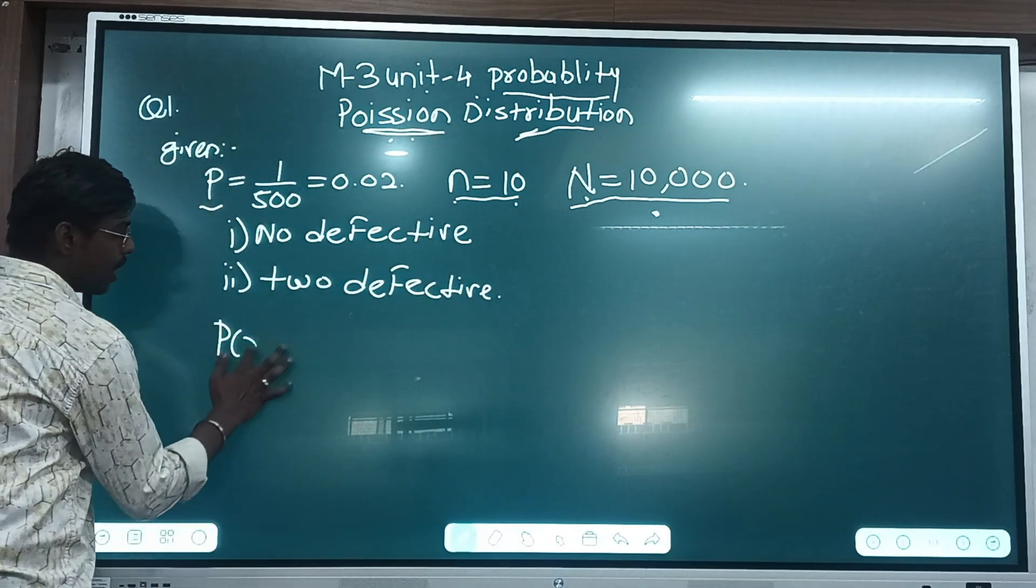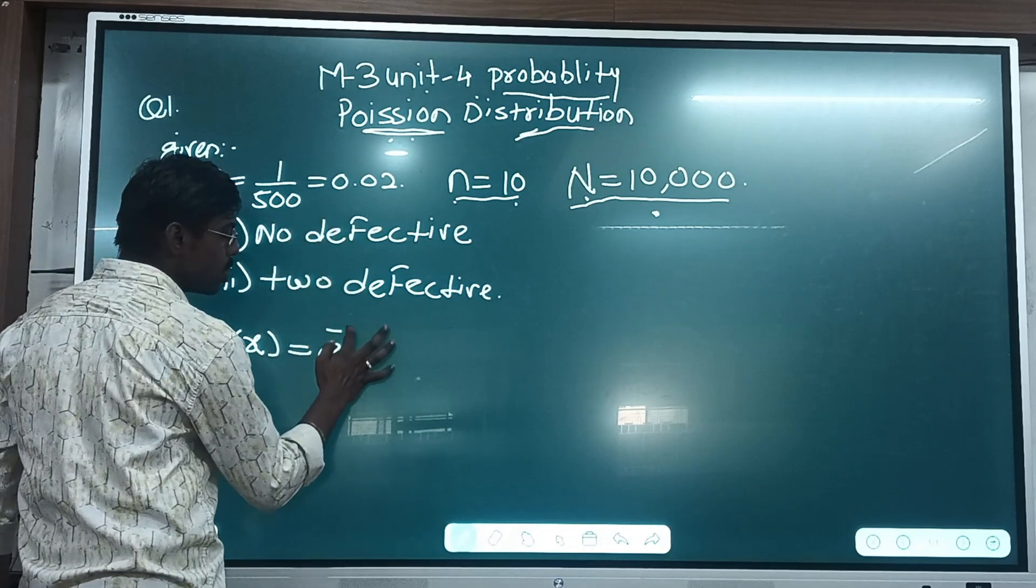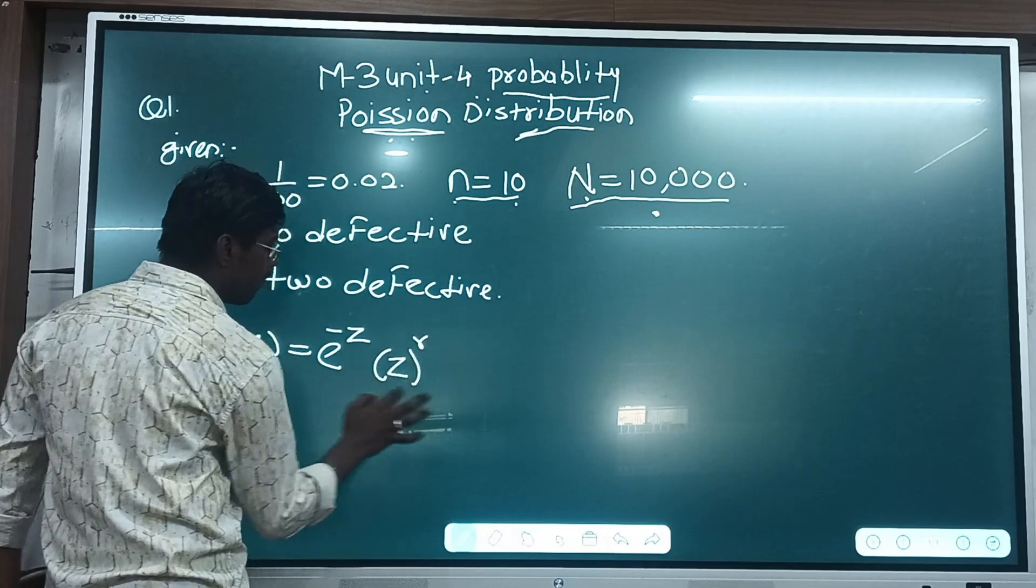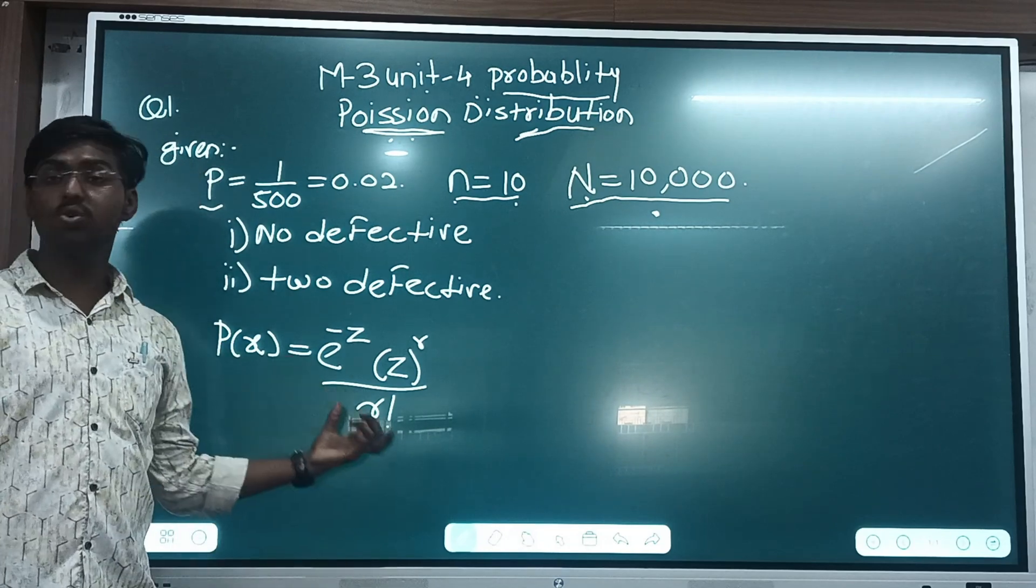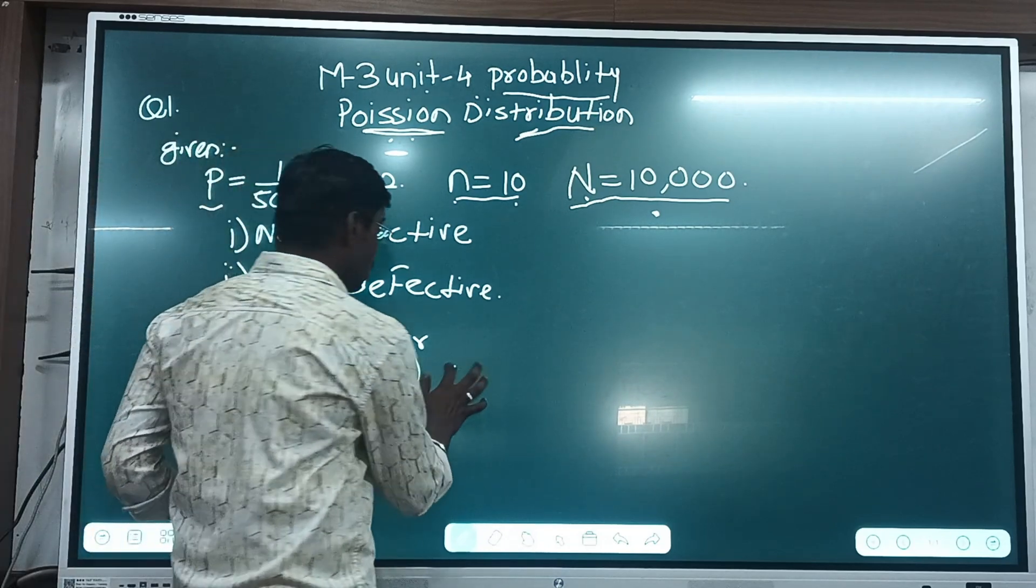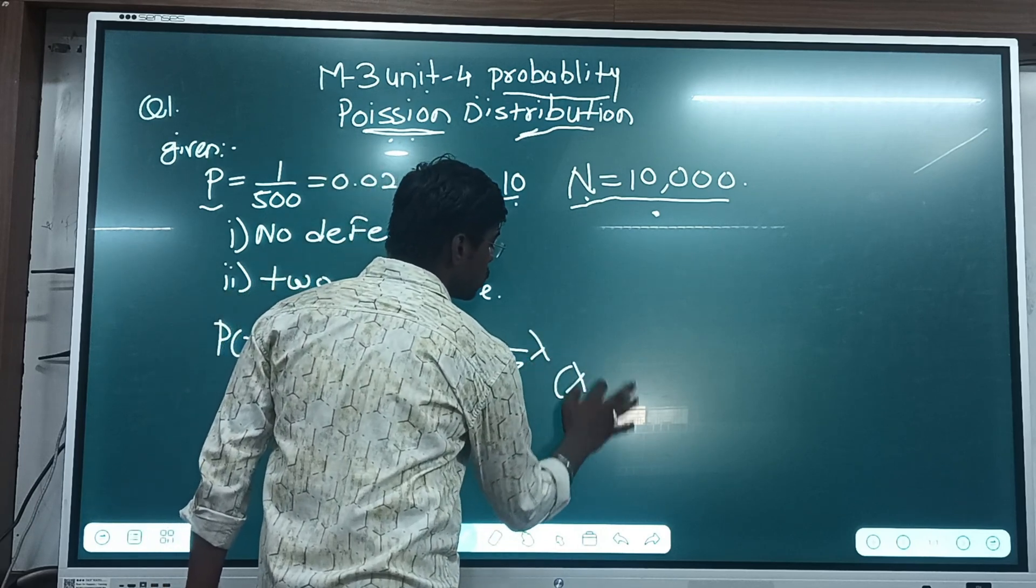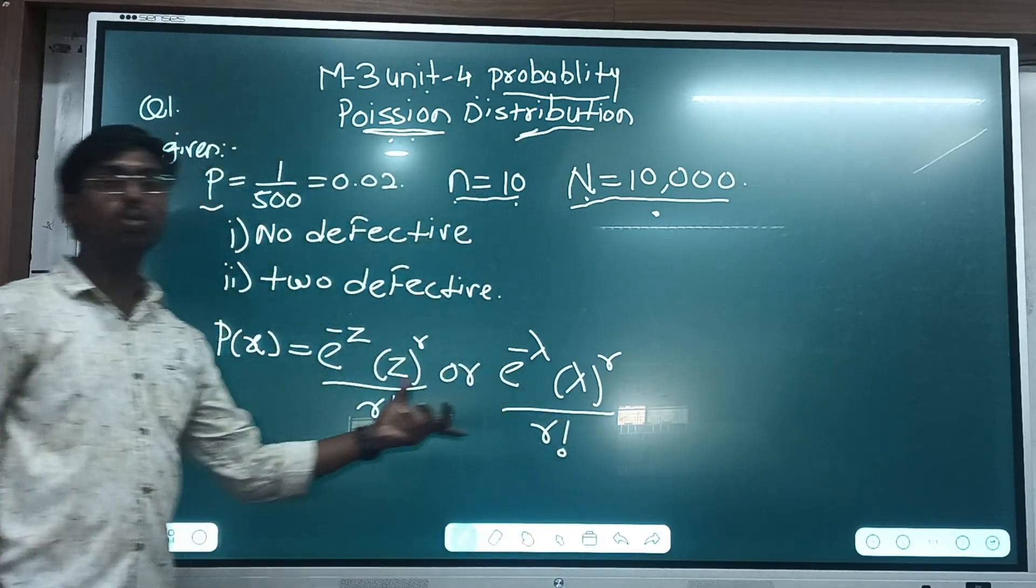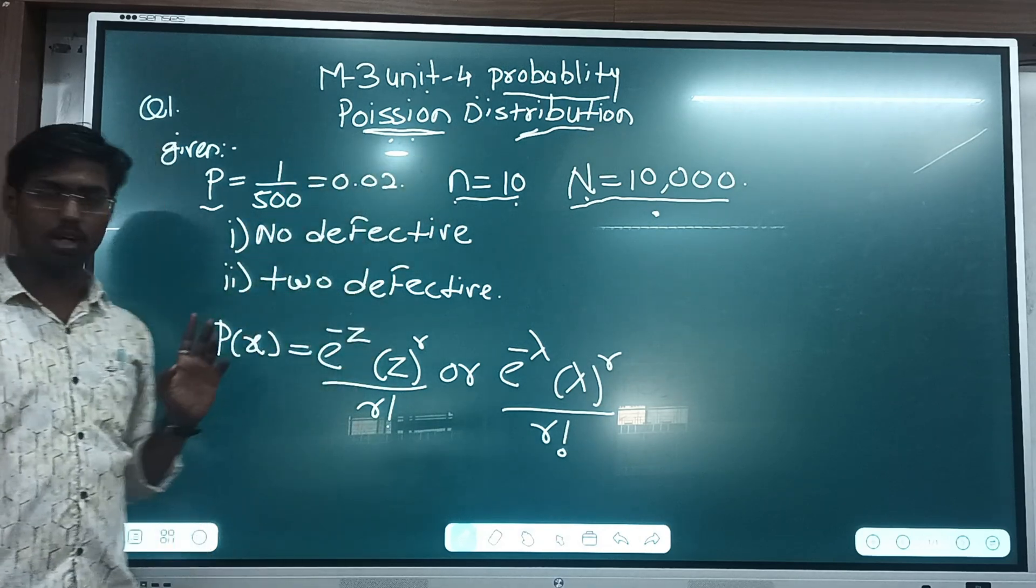So P(x) for the Poisson's distribution, the formula is e raised to minus z, z to the bracket r divided by r factorial. Sometimes many students use this formula, or it is used e raised to minus lambda into lambda raised to r by r factorial. These two formulas are used to determine Poisson's distribution.